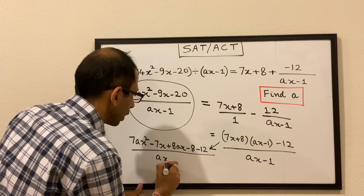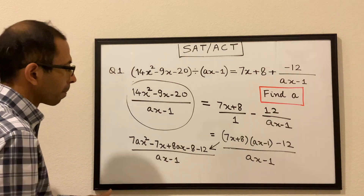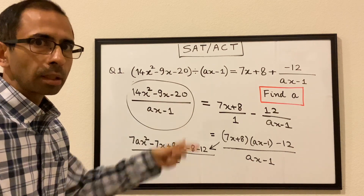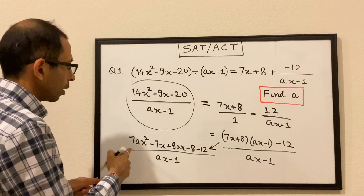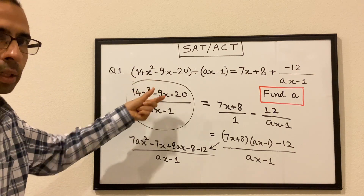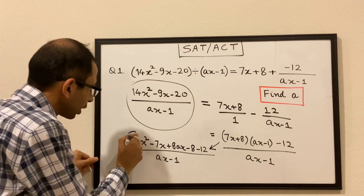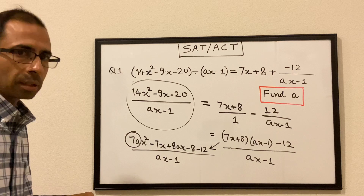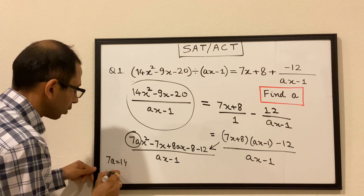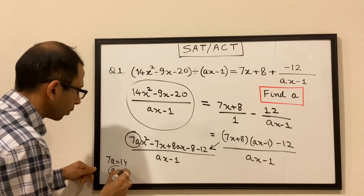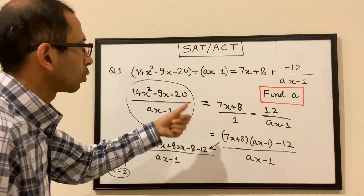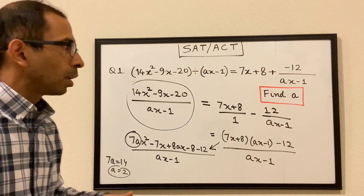Minus 8 minus 12 becomes minus 20, so the constant terms do match. Now looking at the x² coefficient: for the two sides to be equal, 7a must equal 14. So 7a equals 14, which gives us a equals 2.